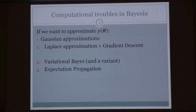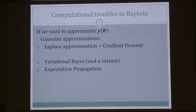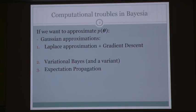Suppose we want to approximate some probability distribution p of theta, which, given that this is a Bayesian workshop, might be a posterior distribution. I'm going to look at multiple ways to compute Gaussian approximations to this target p of theta: the Laplace approximation, variational Bayes, and expectation propagation.